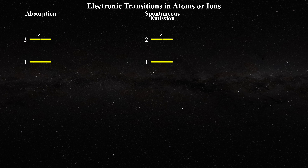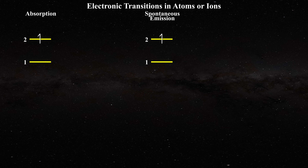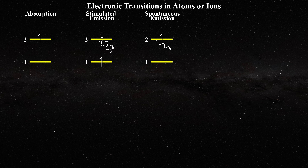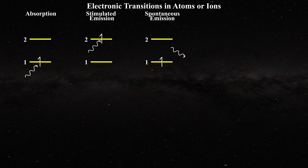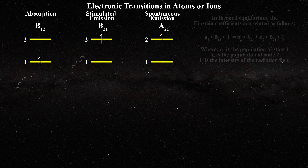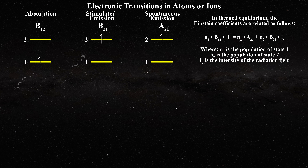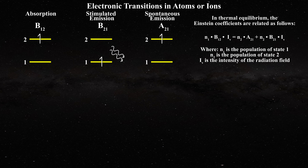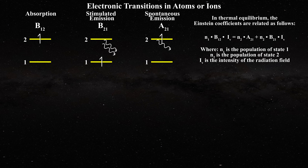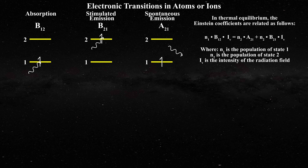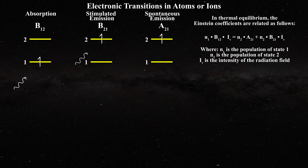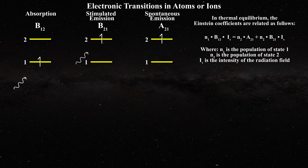Eventually the ion will relax and return back to state 1 — this is known as spontaneous emission, and a new photon will be emitted. It is also possible that once an electron is excited, the ion interacts with another photon and two photons are released upon relaxation back to state 1 — this is known as stimulated emission. As a result there are three Einstein coefficients: B12, B21, and A21. B12 relates to absorption, B21 to stimulated emission, and A21 to spontaneous emission of a single photon. In the NIST tables this coefficient is labeled as AKI, where the upper state is K and the lower state is I.